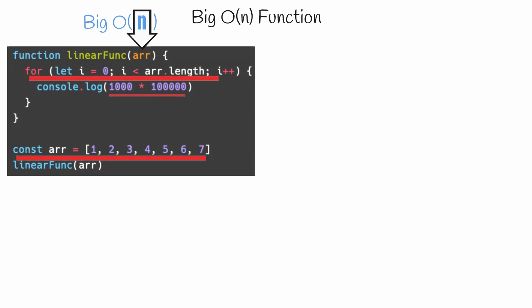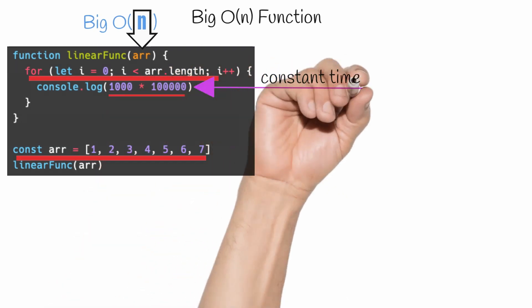Now don't let these large numbers fool you. It will always take the same amount of time to multiply 1000 times 100,000. Therefore, this line of code takes constant time, which brings me to a very important point.